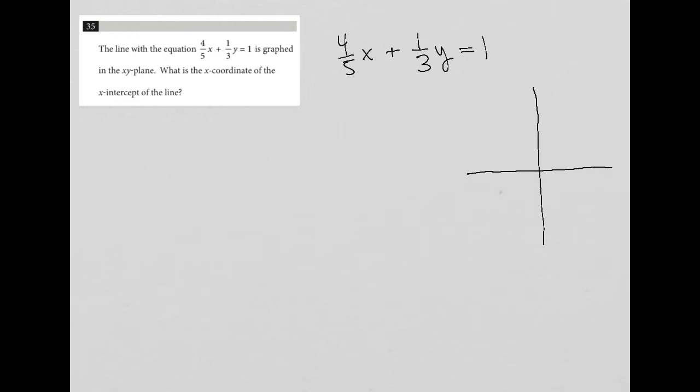I could rearrange this into slope-intercept form, so y equals mx plus b, and then graph, or throw into my graphing calculator. But I think there's an easier way to go about this.